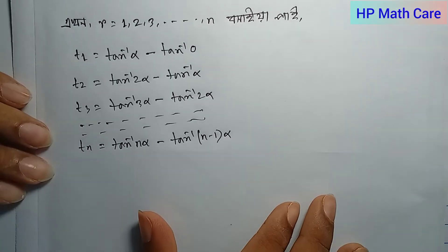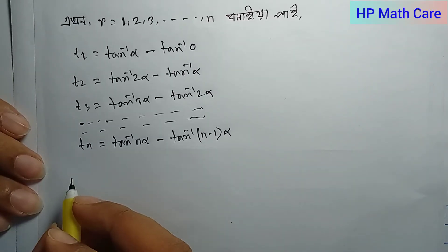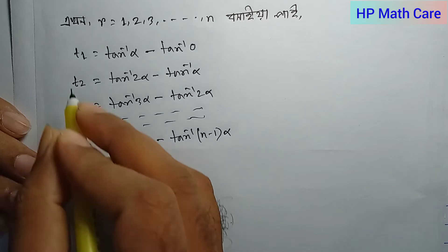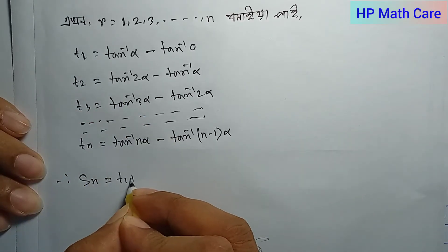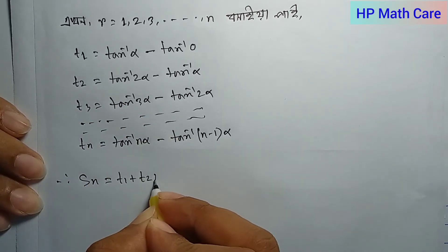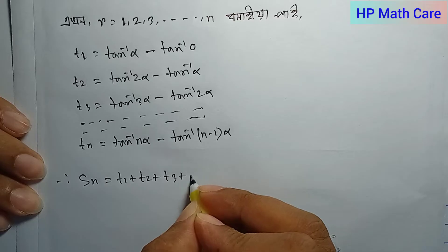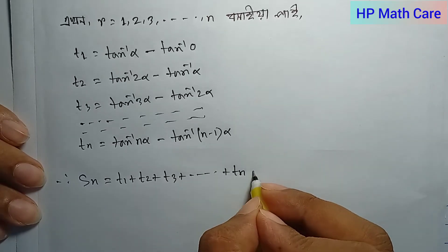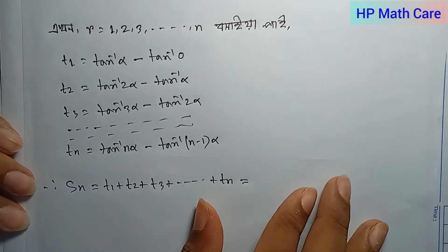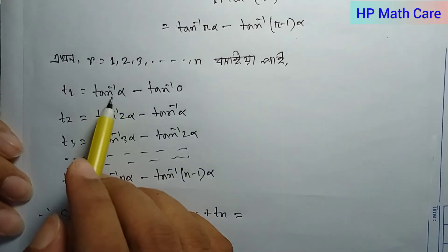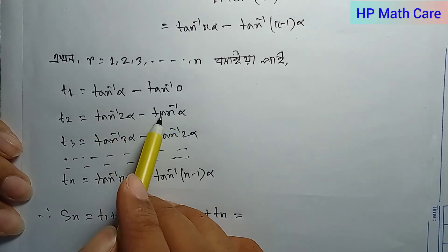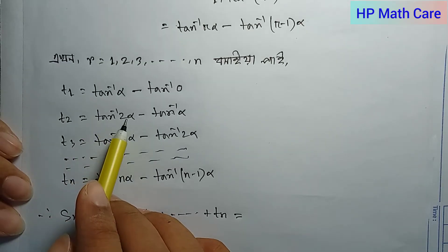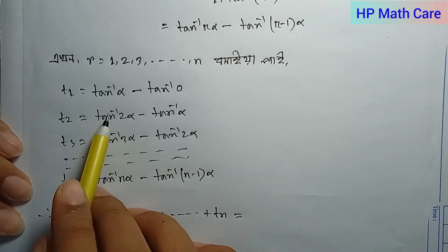Now collecting all terms: T1 plus T2 plus T3 plus up to Tn. When we add these, most intermediate terms cancel because of the telescoping pattern. Each positive tan⁻¹ cancels with a negative tan⁻¹ from the adjacent term.